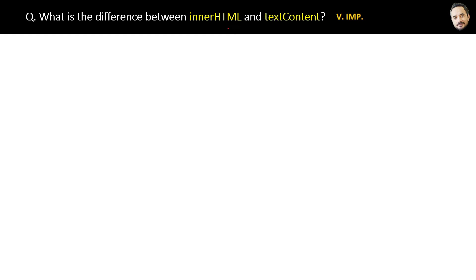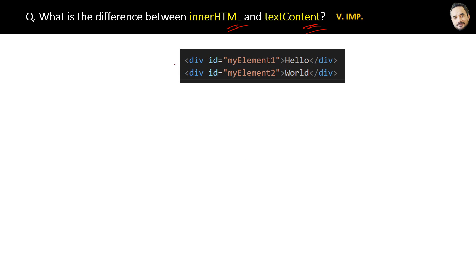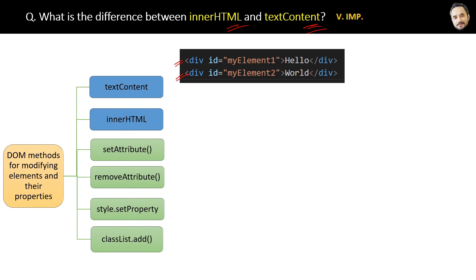What is the difference between innerHTML and textContent? A very good and tricky question. Suppose in our HTML we have two div elements. Now we want to modify 'hello' and 'world' to something else. For that we can use either the textContent or innerHTML properties to modify the content of DOM elements.